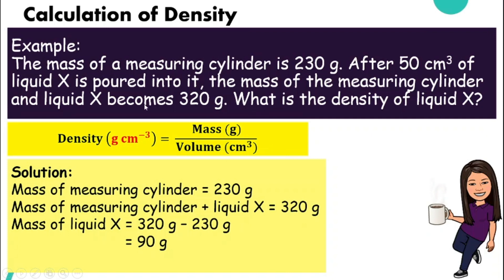How about the volume? Let's look for it in the question. Does the question tell you the volume of liquid X? Yes, it's right here. 50 centimeter cube. So after you have collected enough information, we can calculate density by applying the formula. Mass divided by volume. So 90 grams divided by 50 centimeter cube.